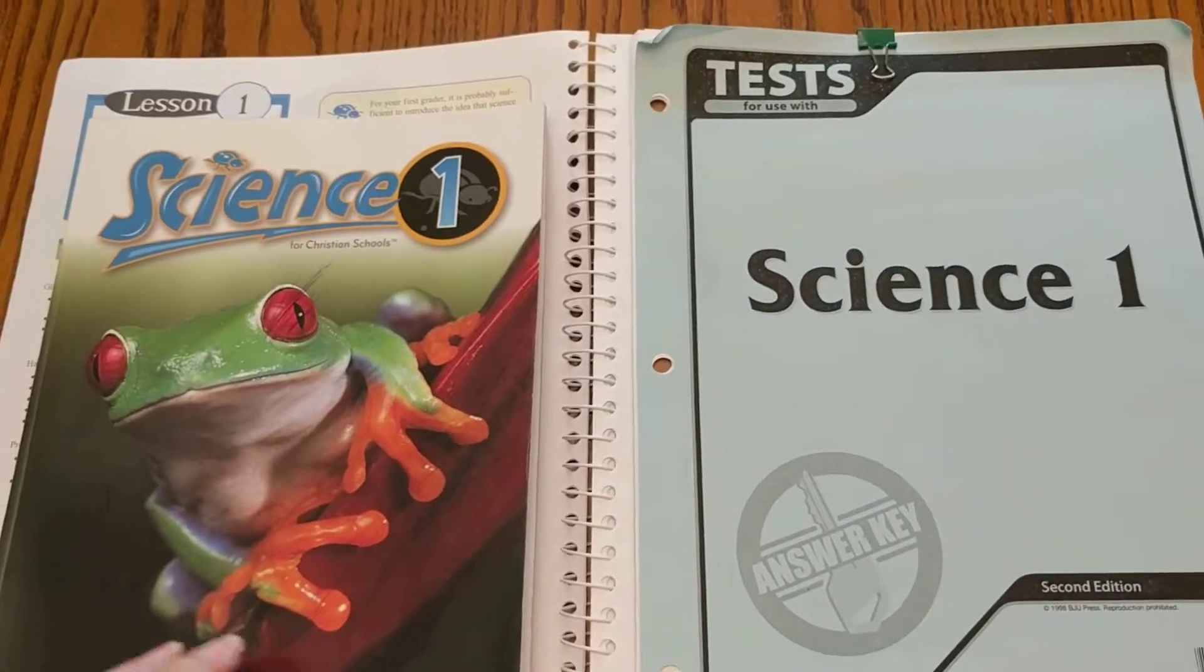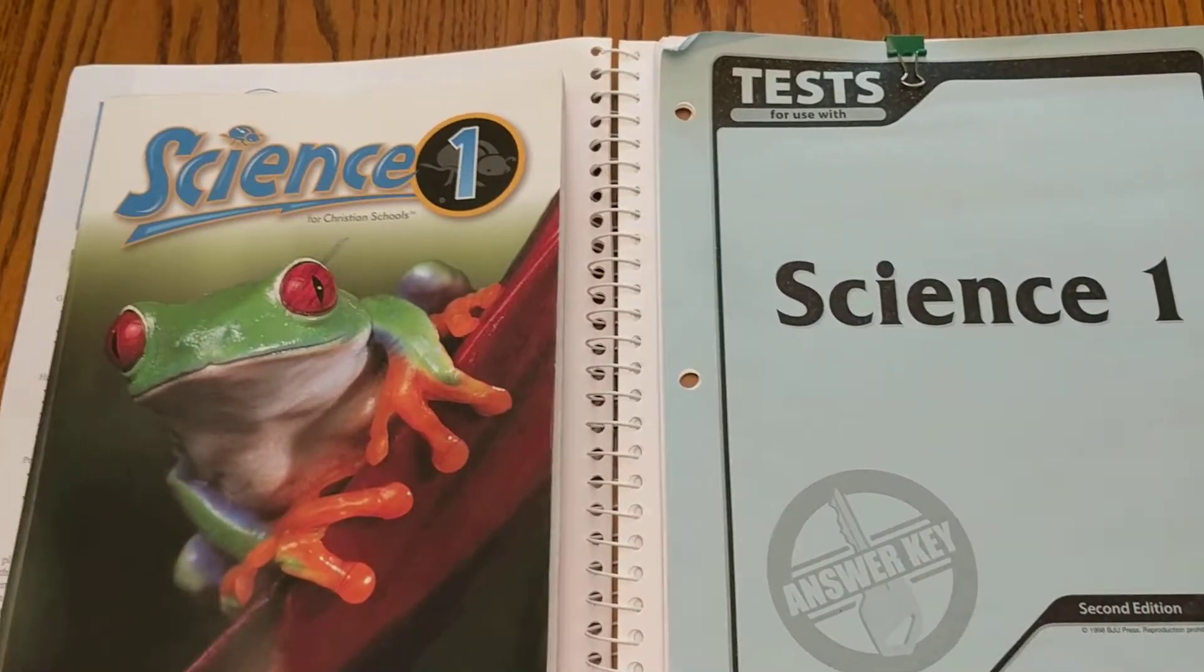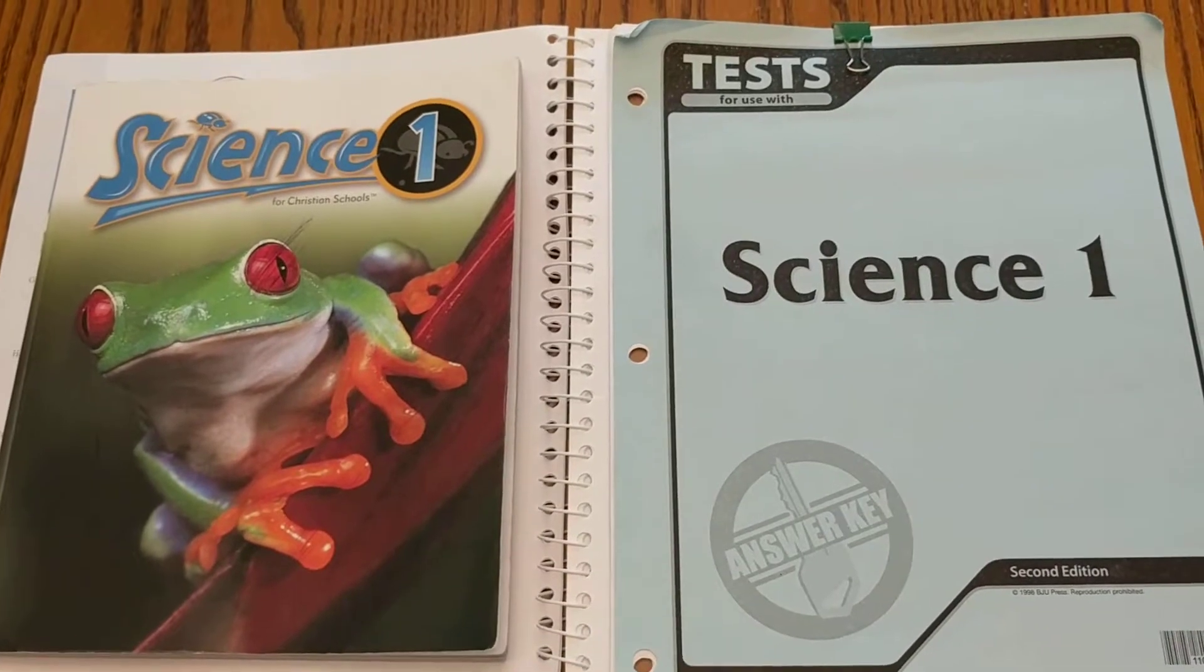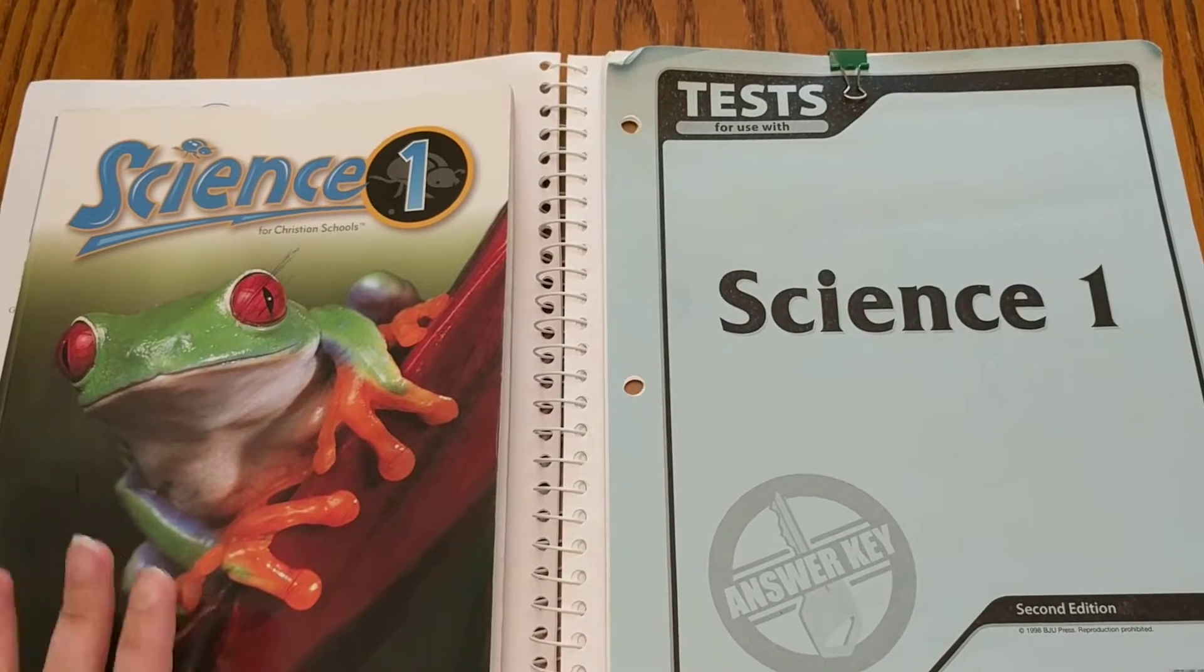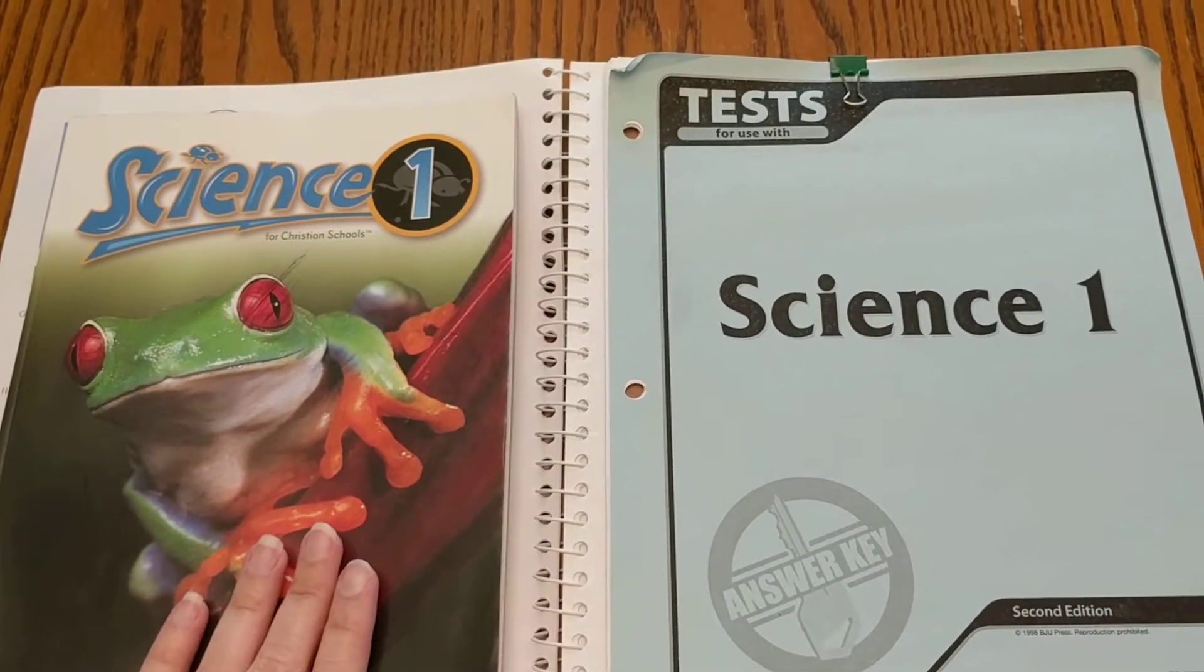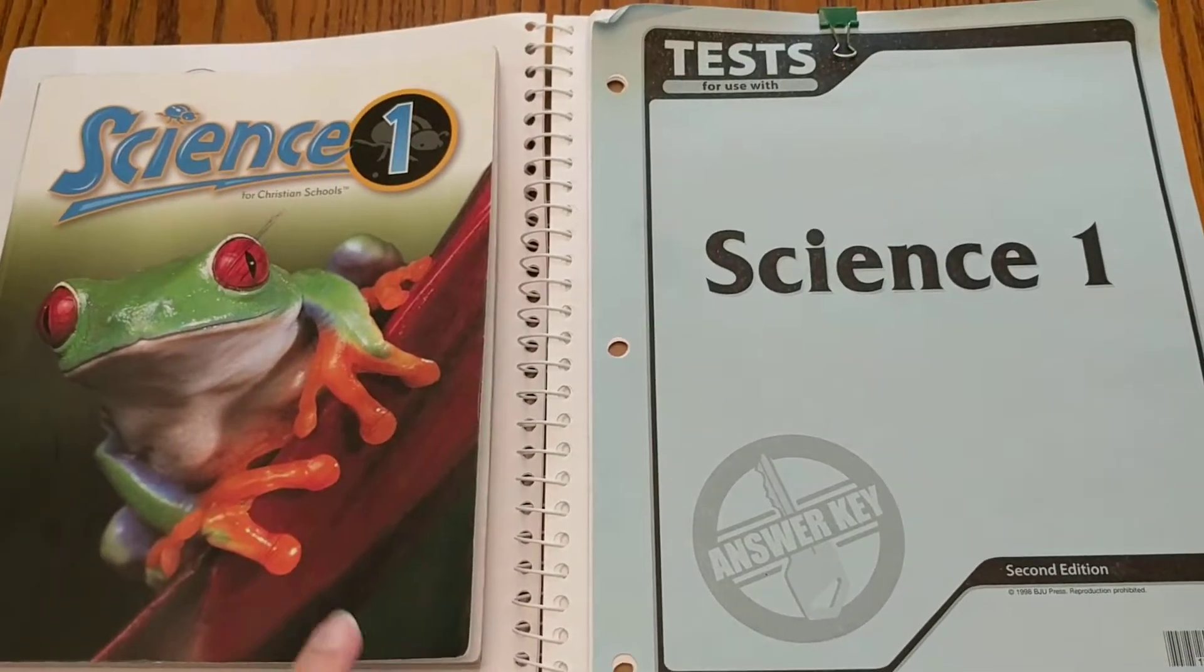But this is the BJU Science Grade 1, 2nd edition. There is a 3rd edition, and if I was to use science for Grade 1, I would use the 2nd edition. I would not use the updated edition, and I'll get to why I wouldn't.